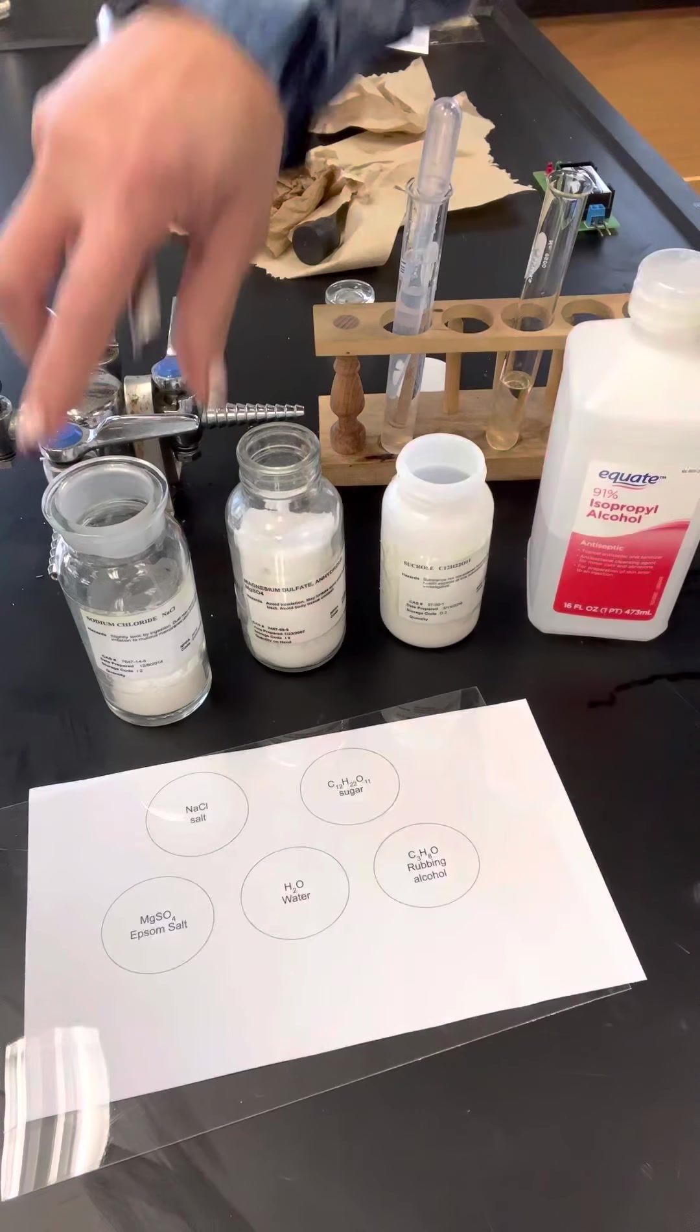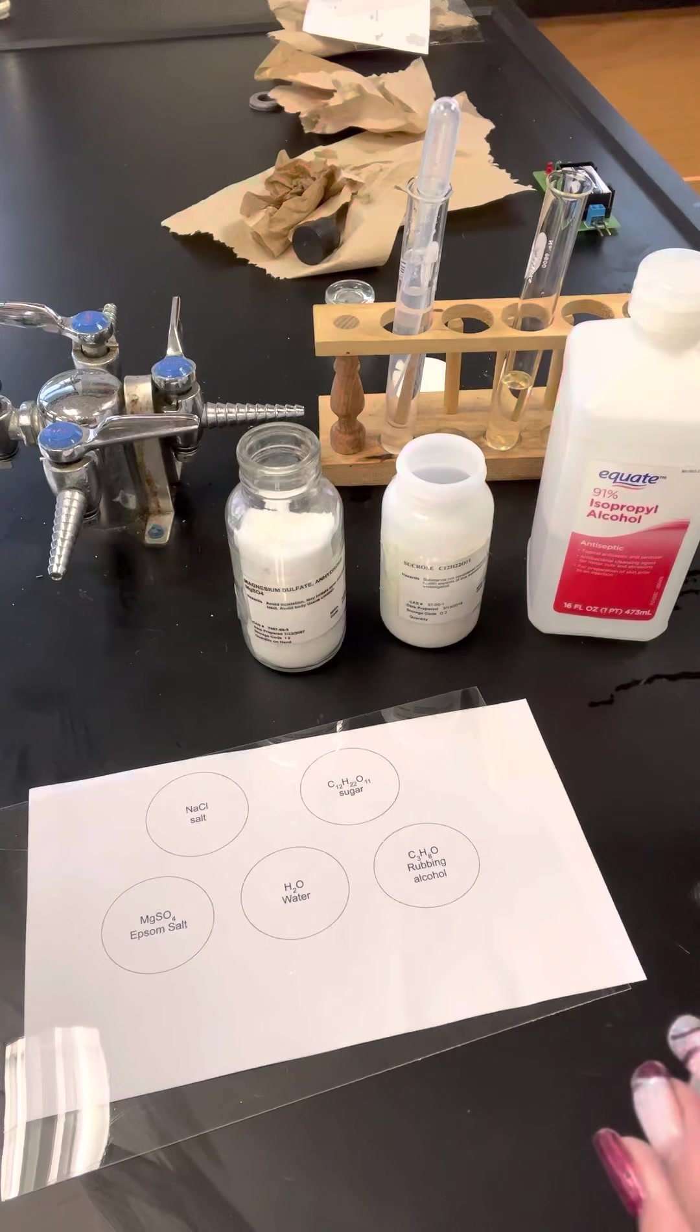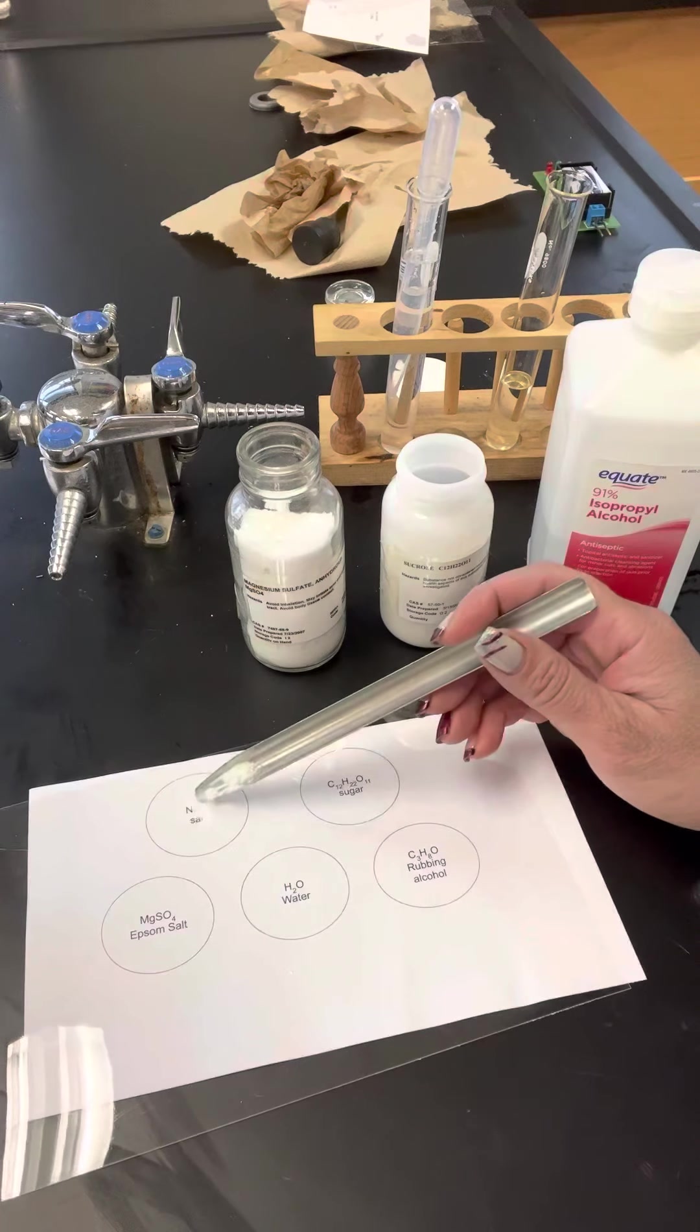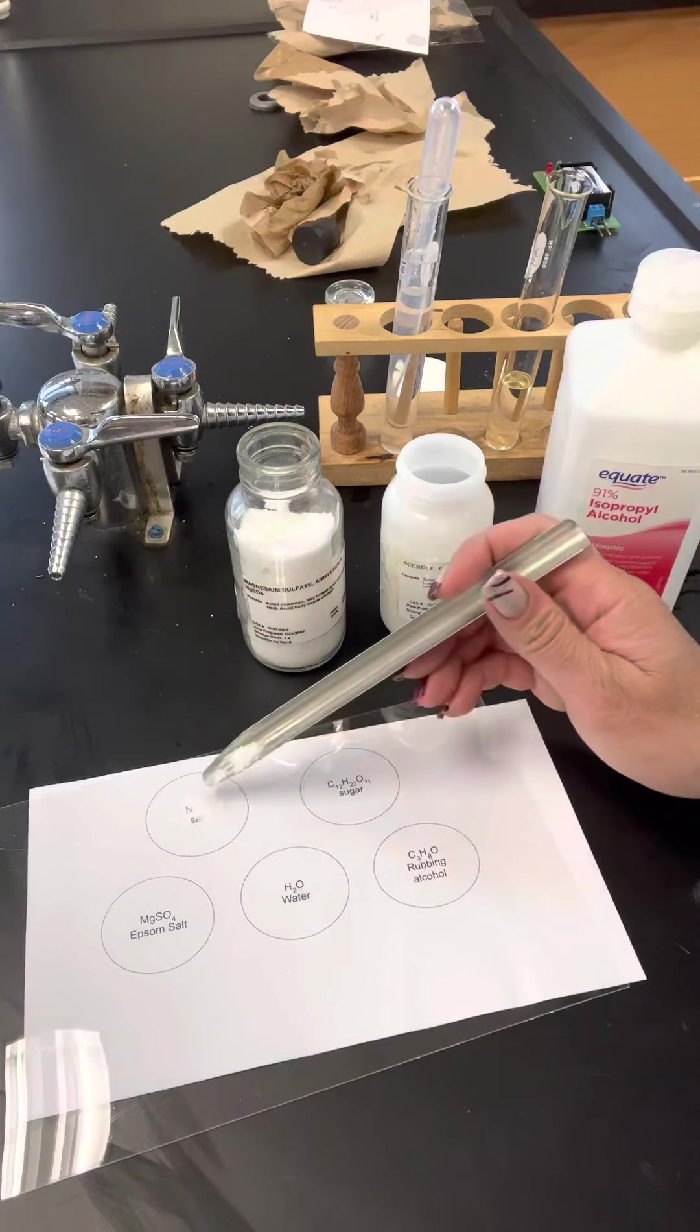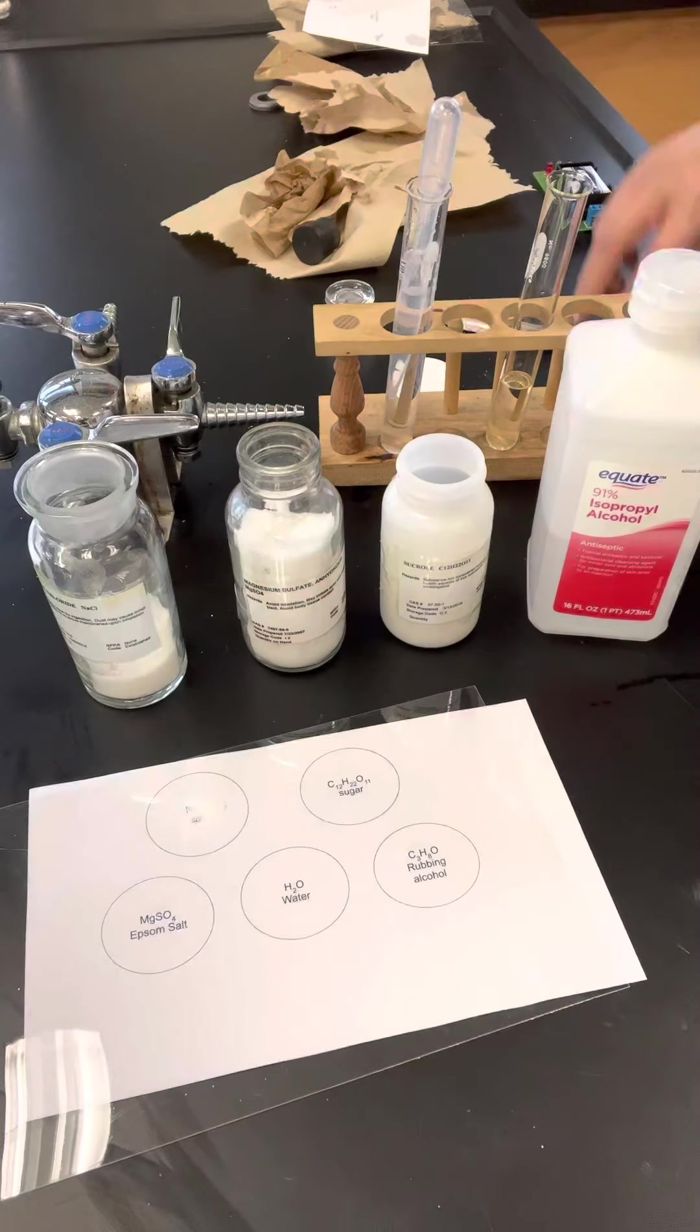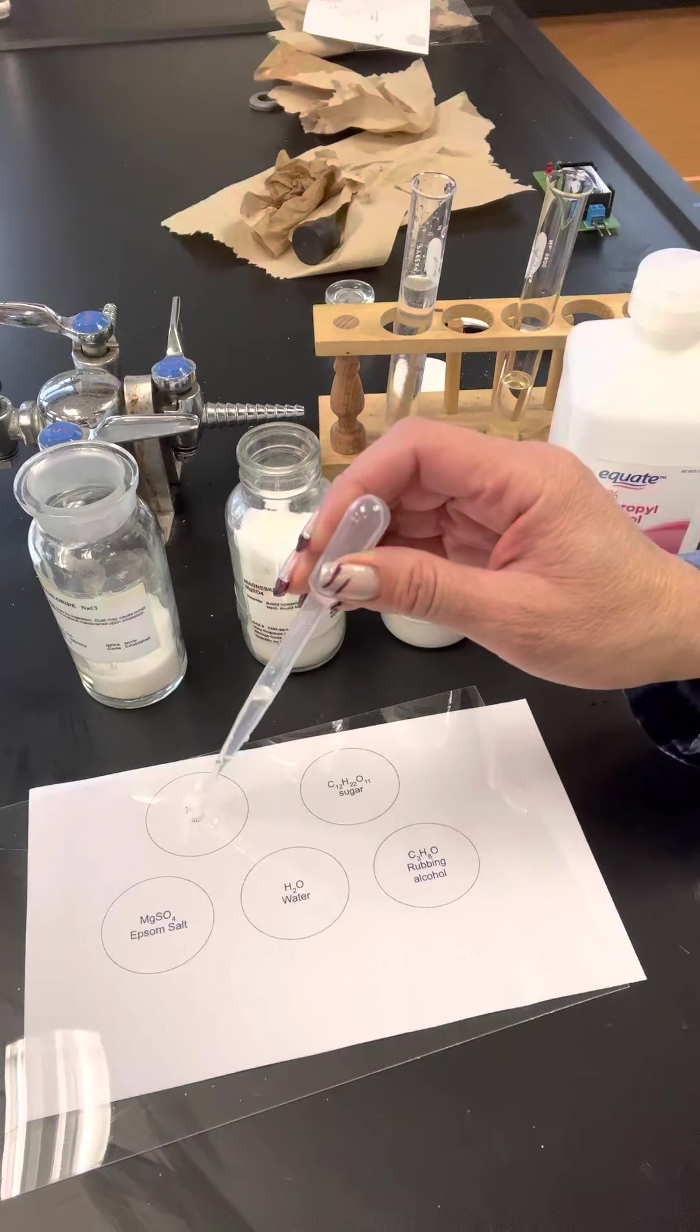So what I'm going to do is take the sodium chloride and put a couple scoops, the size of about an M&M, onto where it says salt. Then I'm going to add some water to dissolve the salt. There's the salt, and I'm going to add some water.